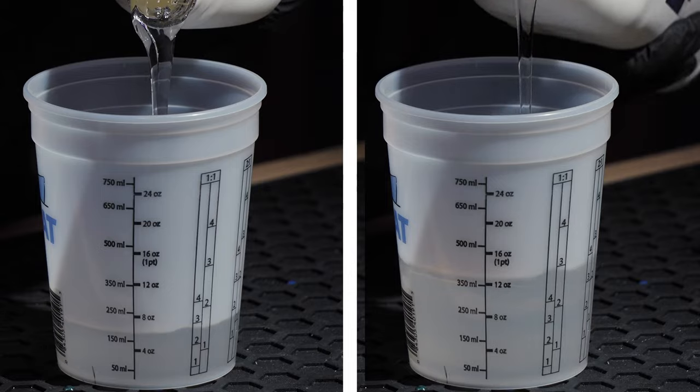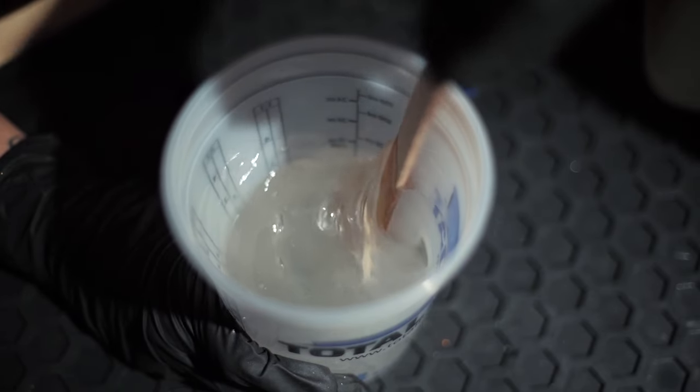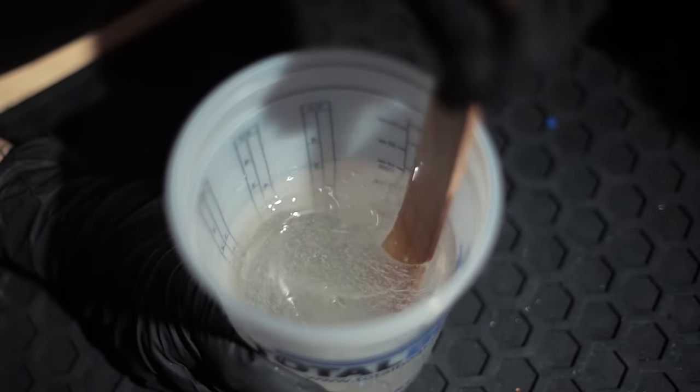Measure equal parts A and B. Mix slowly, being sure to scrape the bottom and sides until the liquid moves from cloudy to clear.